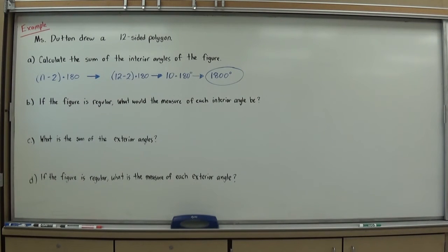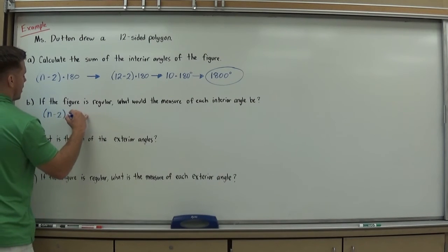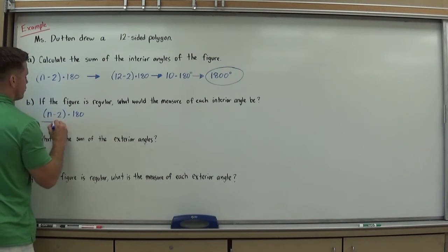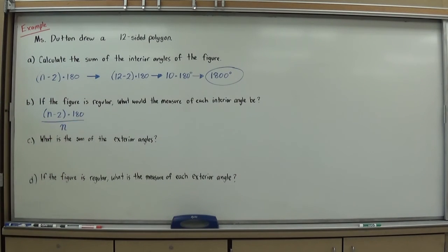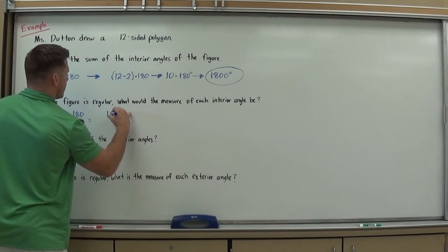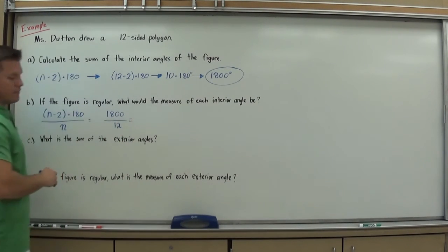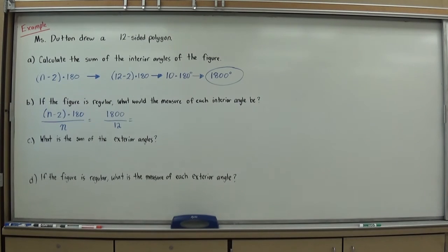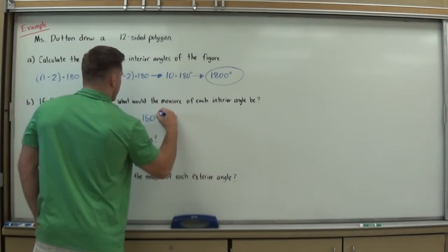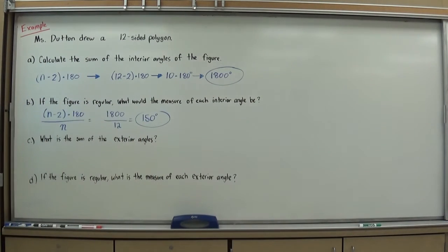Next it says: if the figure is regular, what would the measure of each interior angle be? The formula is (n − 2) × 180 divided by n — basically taking the sum and dividing by the number of sides. Since I already have that sum, I can just do 1800 ÷ 12. That works out to 150 degrees. And checking: 150 × 12 is 1800, so that feels right.